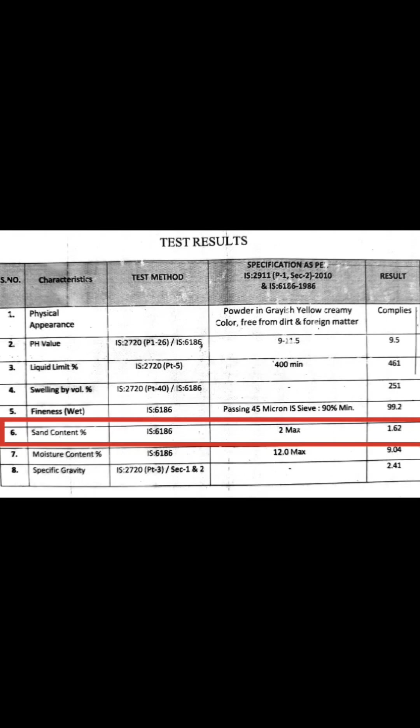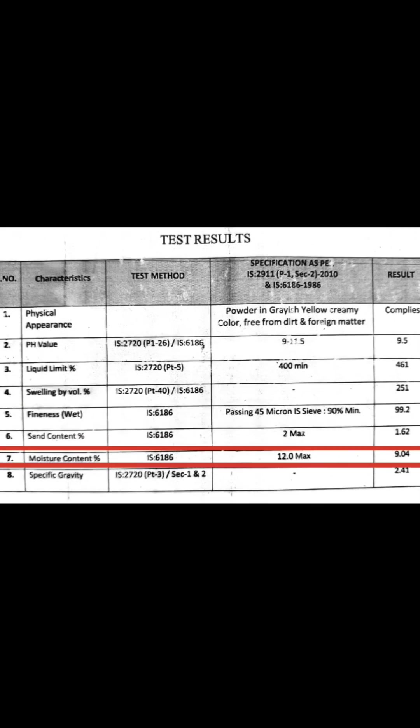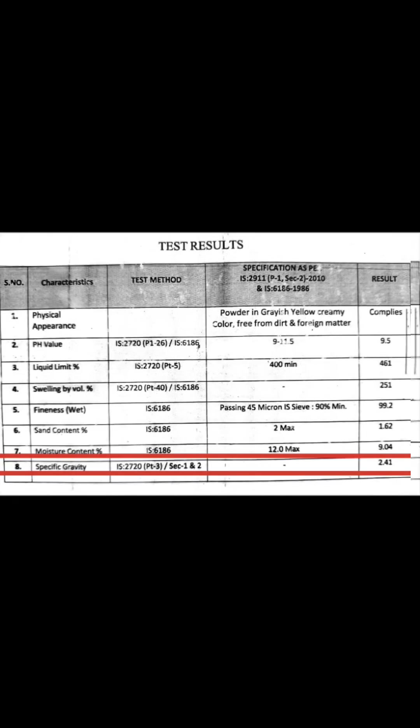Sixth is sand content in percent. IS code 6186. Maximum 2%. Result is 1.62%. Seventh is moisture content in percent. IS code 6186. Maximum 12%. Result is 9.04%.